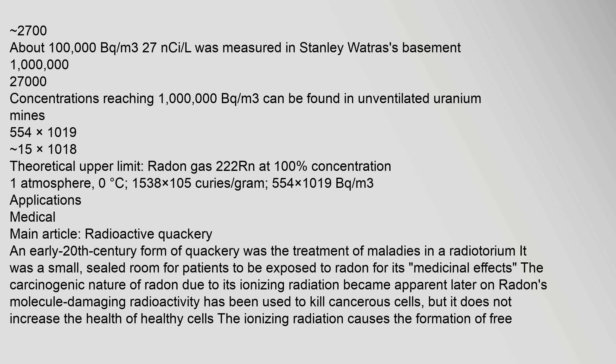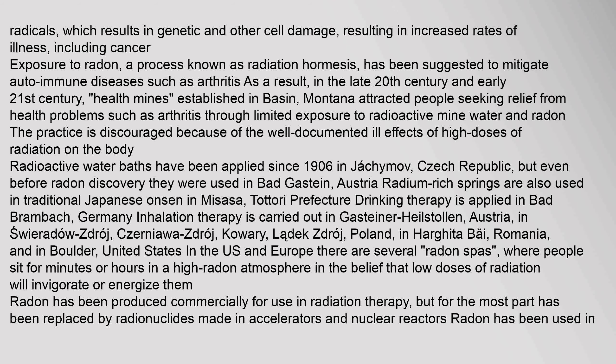Most countries have adopted a radon concentration of 200 to 400 Bq/m³ as the action level. High radon concentrations — about 100,000 radicals — result in genetic and other cell damage, increasing rates of illness including cancer. Exposure to low doses of radon, a process known as radiation hormesis, has been suggested to mitigate autoimmune diseases such as arthritis. As a result, in the late 20th and early 21st century, health mines in Basin, Montana, attracted people seeking relief from arthritis through limited exposure to radioactive mine water and radon.